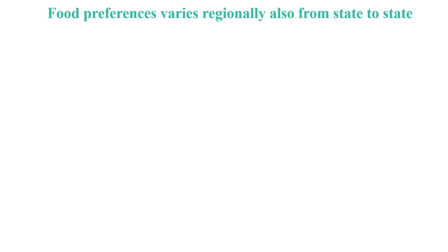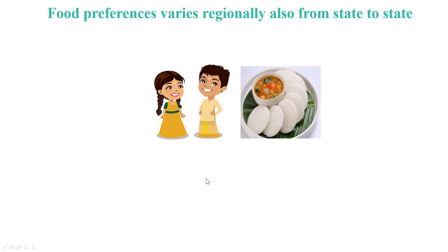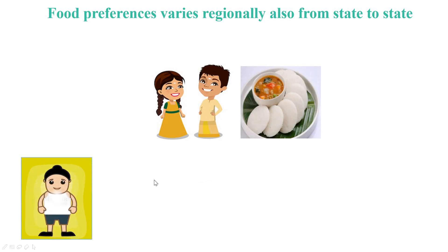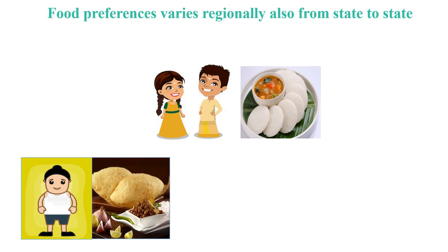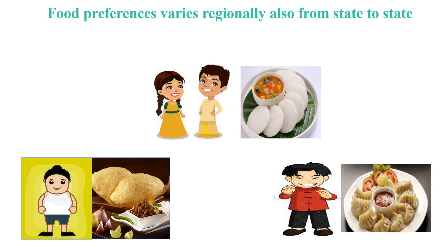There is one another important factor which decides our food choices — that is regional difference, state to state difference. For example, a South Indian boy or girl in your class may prefer to have idli, dosa, vada, sambar, etc. Whereas a Punjabi boy enjoys chole bhature, parathas, sarso ka saag, lassi a lot. A northeastern student in your class may like to have momos, noodles, thupka, etc. Thus, there is a lot of variation in food eaten in different regions of India.